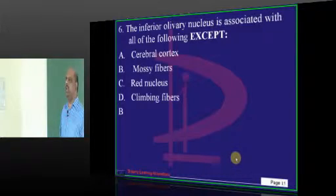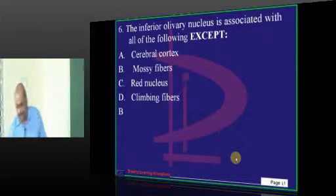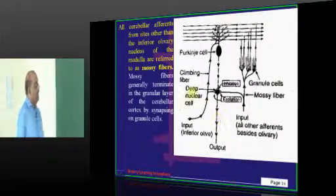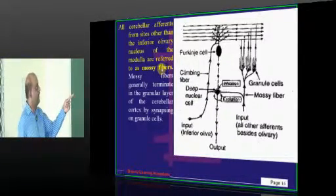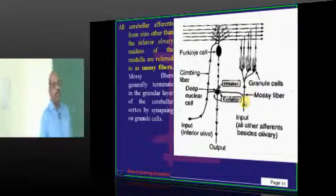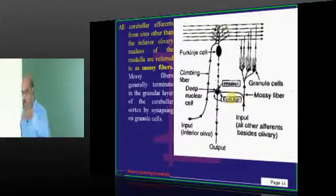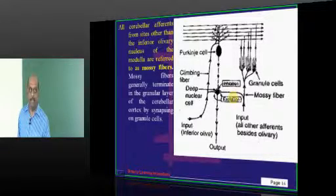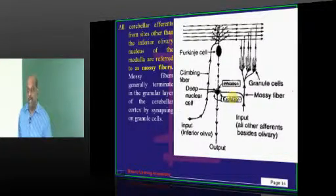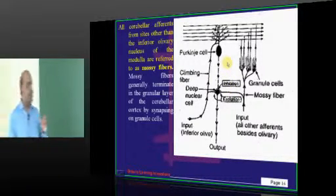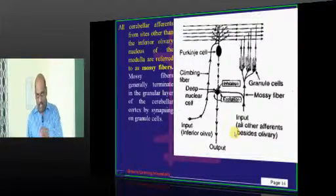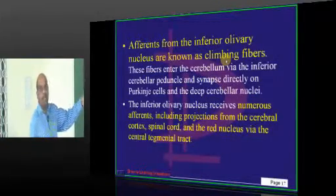Now, coming to the inferior olivary nucleus. Let us talk about the cerebellum doctor. Typically, all the cerebellar afferents will be referred to as mossy fibers except those which come from the inferior olivary nucleus. Where is inferior olivary nucleus located? In the medulla. See, medulla communicates with cerebellum through inferior cerebellar peduncle. Midbrain communicates to superior cerebral peduncle. Pons communicates through middle cerebellar peduncle. So that inferior olivary nucleus in the medulla communicates to the inferior cerebellar peduncle and those fibers which come from the inferior cerebellar peduncle and from the inferior olivary nucleus are basically called as climbing fibers.